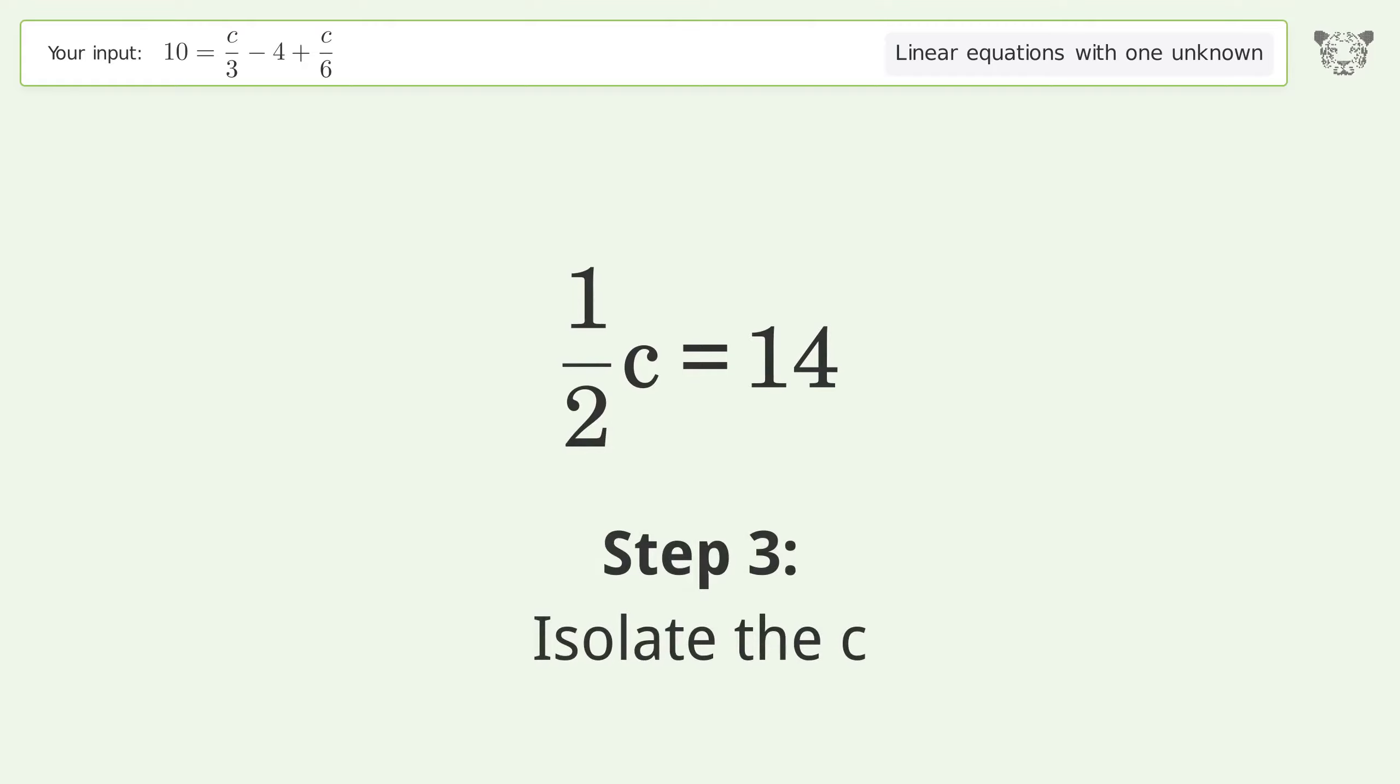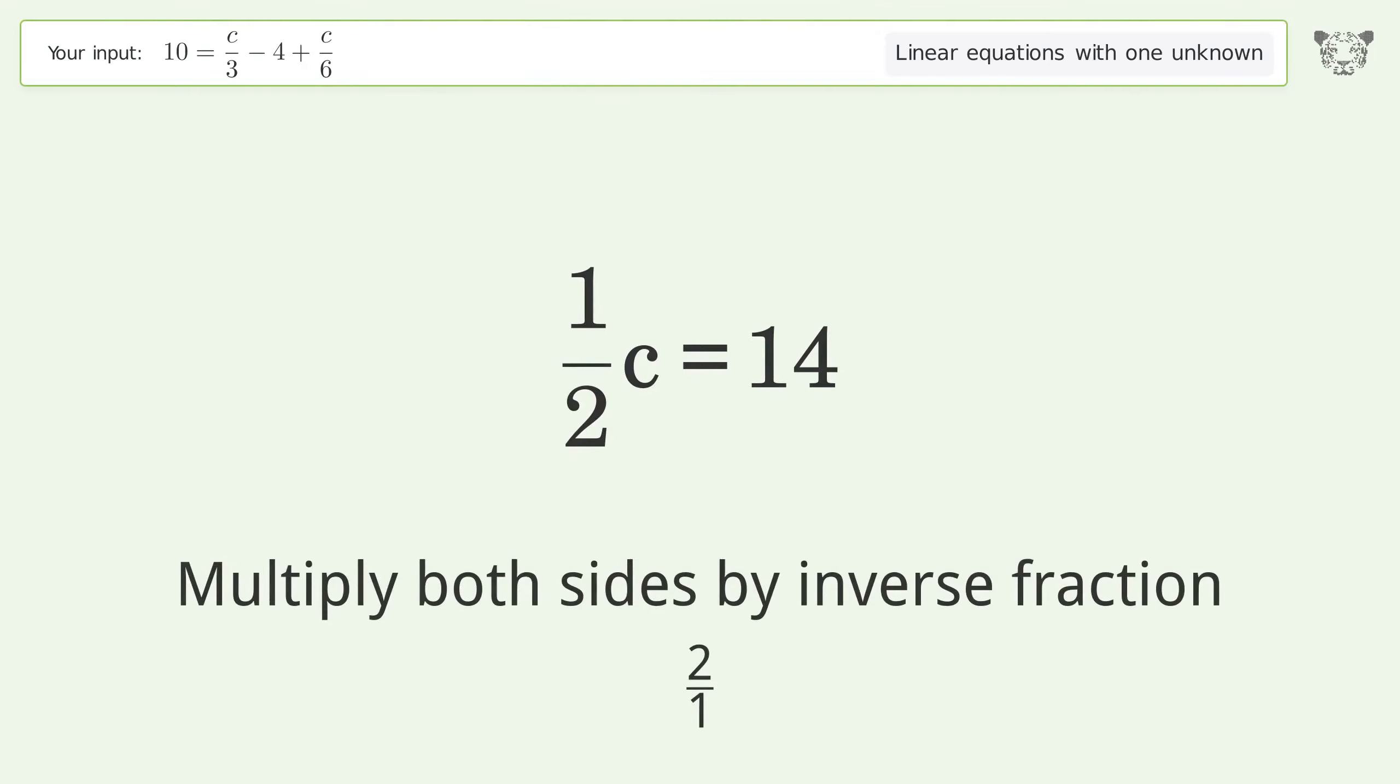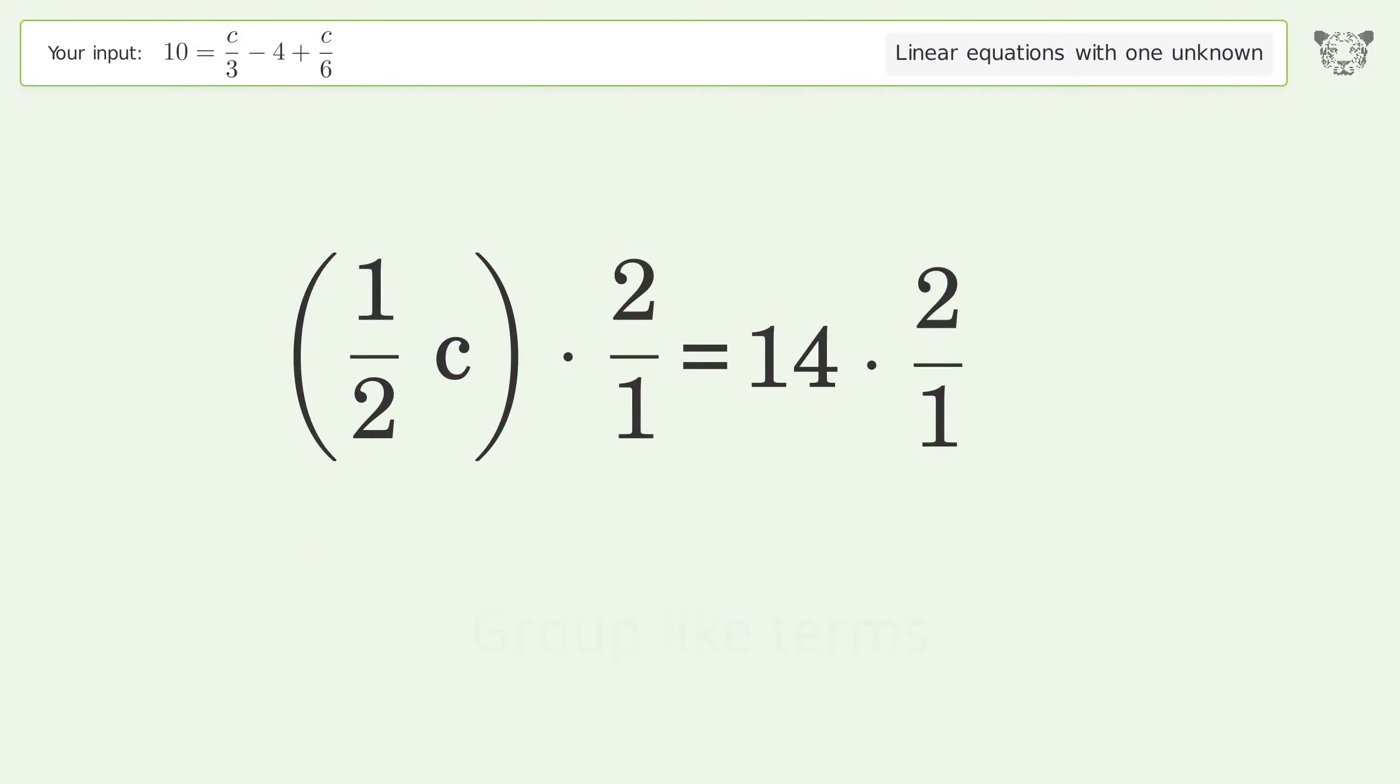Isolate the c. Multiply both sides by the inverse fraction 2 over 1. Group like terms.